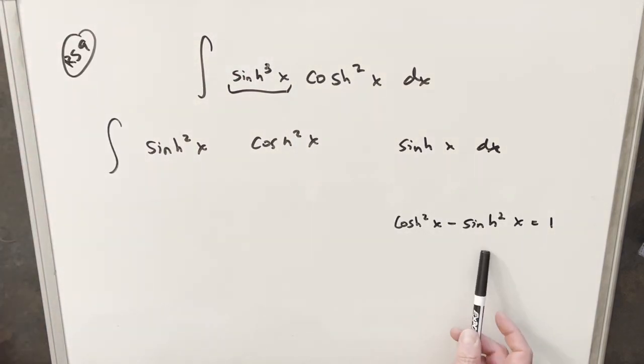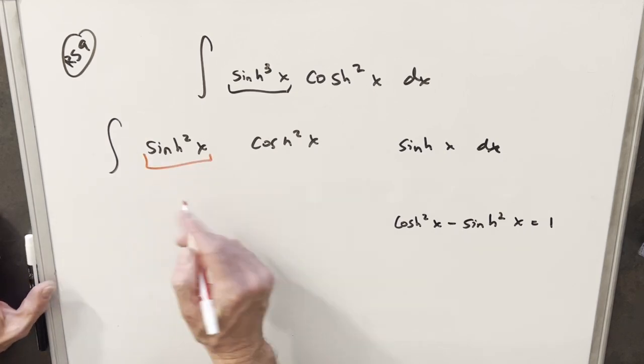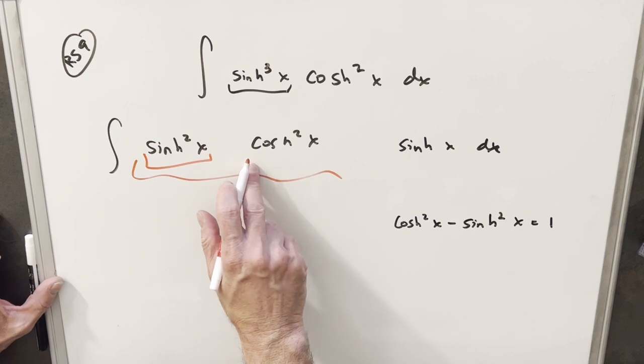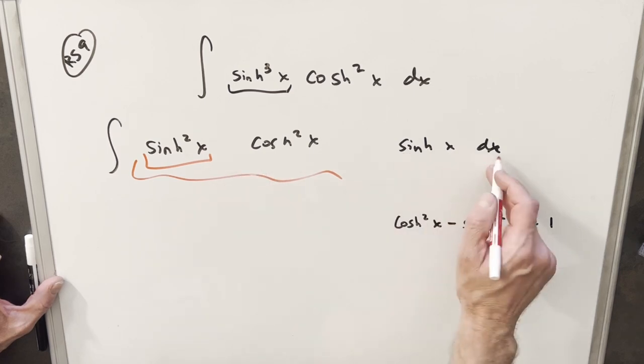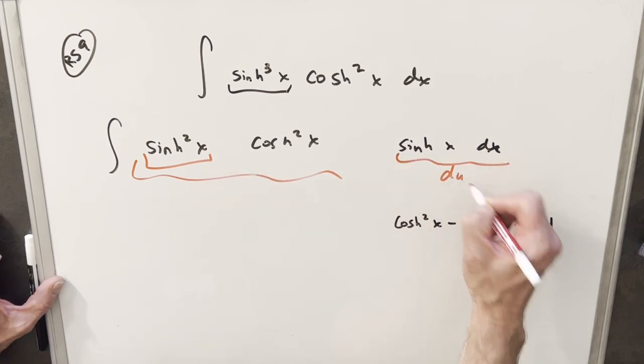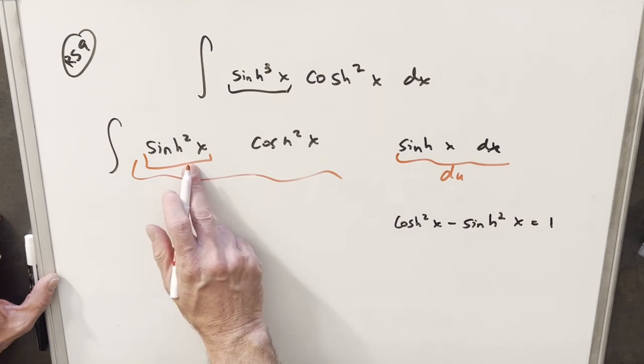Next what I want to do is make use of this identity, because what I'm trying to do is get everything in terms of cosh so that our du will be sinh x dx. So I need to convert this sinh squared.